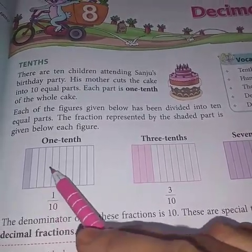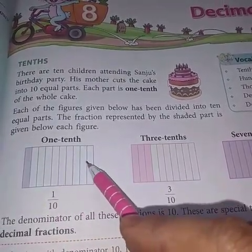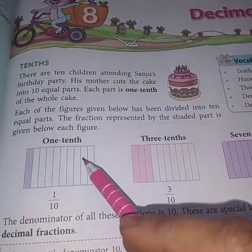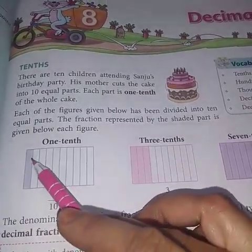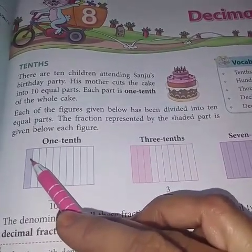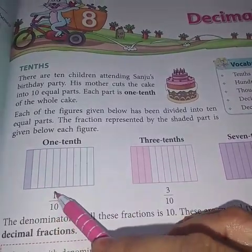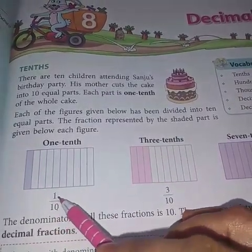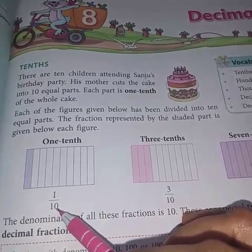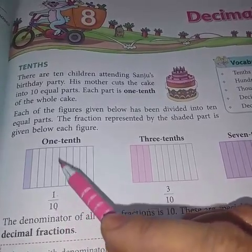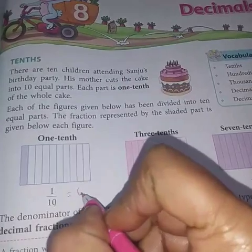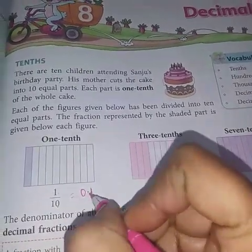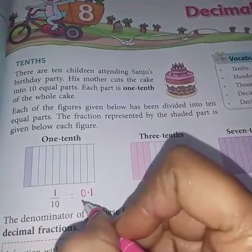Like if this is a picture and it is divided in 10 parts, and out of 10 parts 1 is shaded, then what will we say? That 1 picture is shaded out of 10, that is 1 upon 10. That is the decimal number. It is written as 0.1. This is called its decimal number.